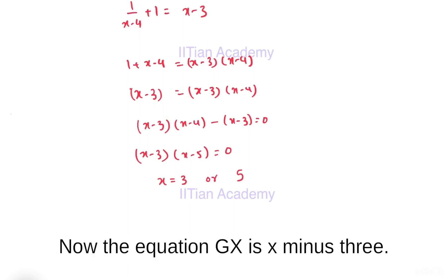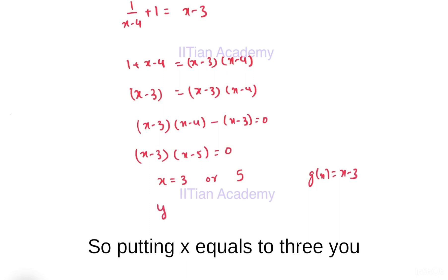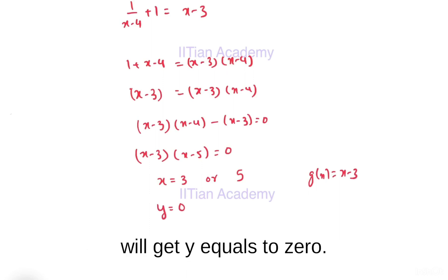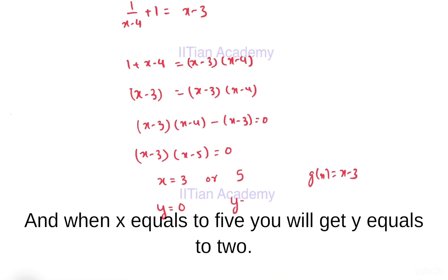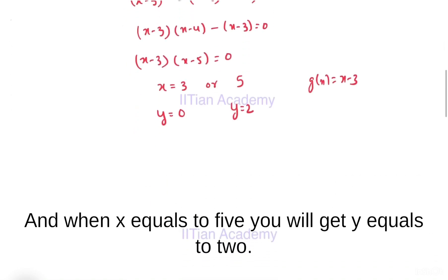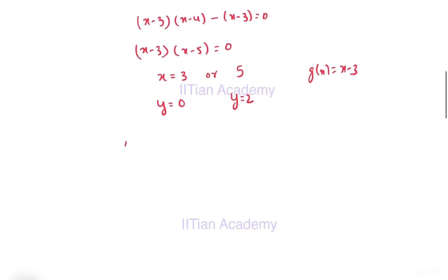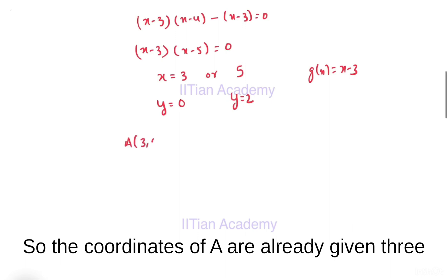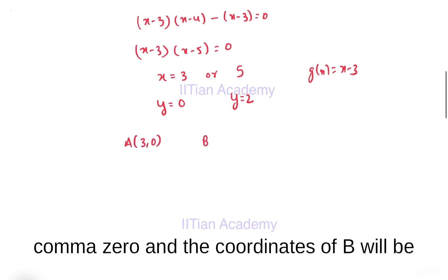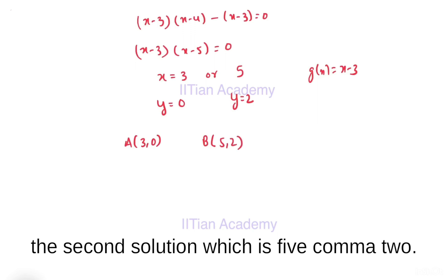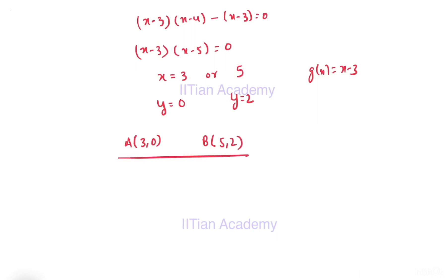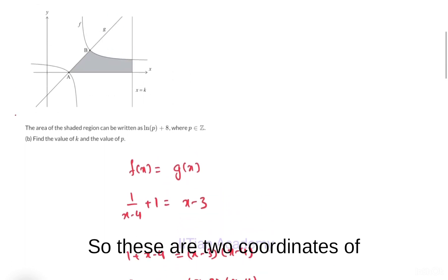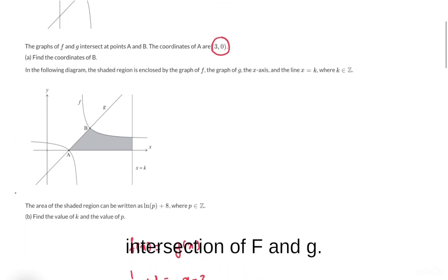So we have x = 3 or x = 5. Using g(x) = x - 3: putting x = 3 gives y = 0, and when x = 5, y = 2. So the coordinates of A are (3, 0) and the coordinates of B are (5, 2). These are the two coordinates of intersection of f and g.